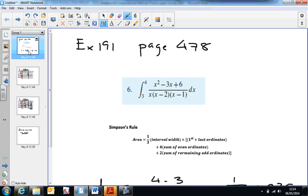And if we look at the Simpsons rule here, it tells us that the area is approximately given by one third, times the interval width, which in this case is 0.25, times the sum of the first plus the last, plus four times the even ordinates, and two times the sum of the remaining odd ordinates.